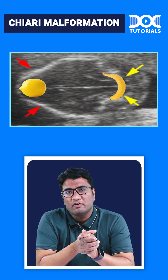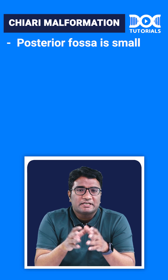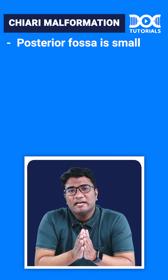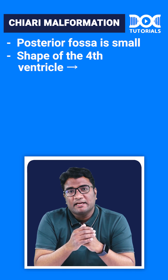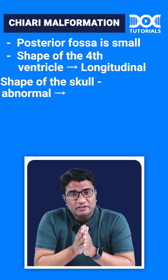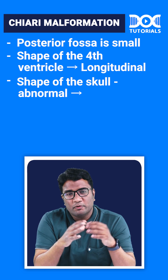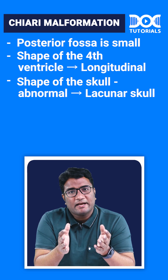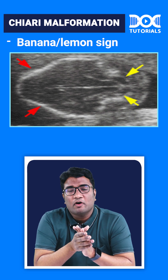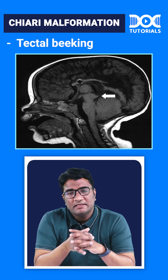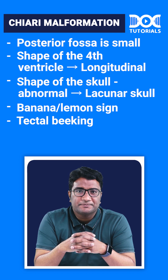Because the vermis is herniating, the posterior fossa in Chiari malformation is small. The shape of the fourth ventricle is more longitudinal, and the shape of the skull also becomes abnormal due to hydrocephalus and anterior bossing of the frontal bone — this is called a lacunar skull. Lacunar skull, longitudinal fourth ventricle, banana sign, lemon sign, and tectal beaking are important features seen in patients with Chiari malformation on an antenatal scan.